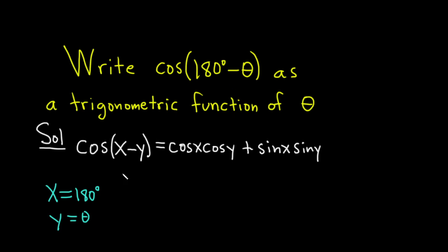So applying this formula to what we have here, we have cosine of 180 degrees minus theta. That's equal to cosine of 180 degrees times the cosine of theta plus sine of 180 degrees times the sine of theta.